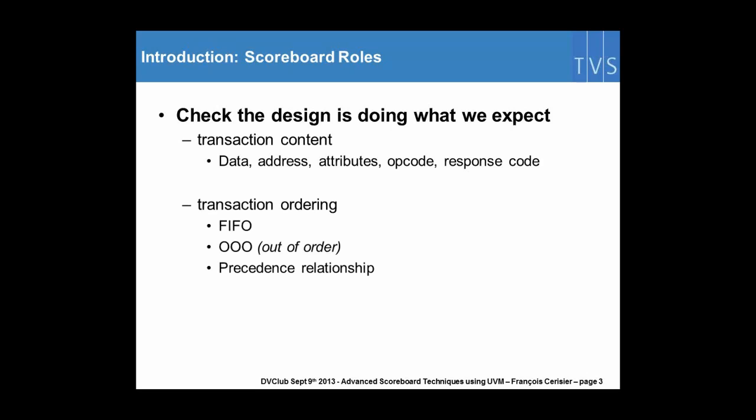The scoreboard can also check the ordering of the transactions. If we have a design where we expect the transactions to be first in, first out, the scoreboard should check that. On the other hand, if we have a design which is completely out of order, so transactions can come and go in different orders, the scoreboard should be able to retrieve the matching transactions.